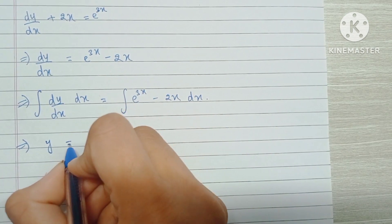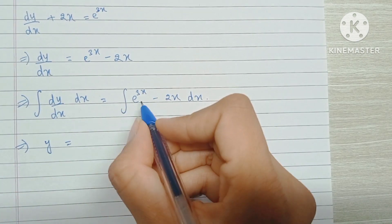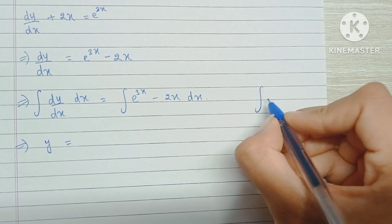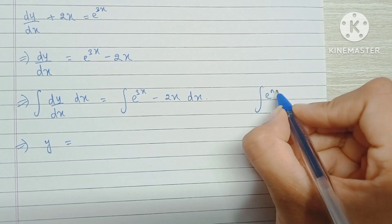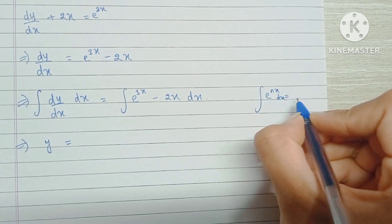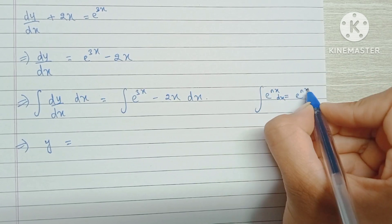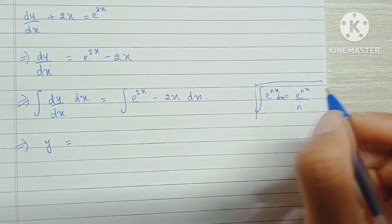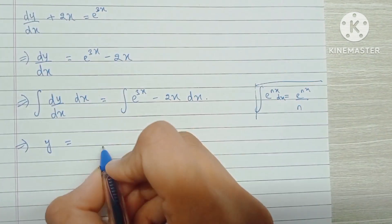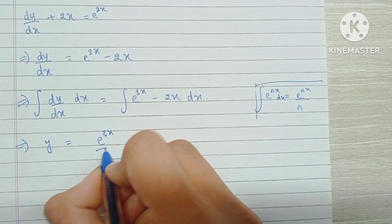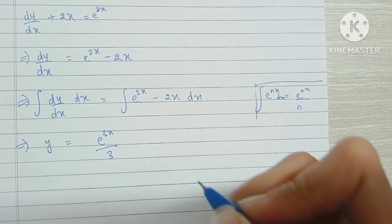Then we have the integral of e raised to 3x. We know that the integral of e raised to nx is just e raised to nx upon n. So this becomes e raised to 3x upon 3.